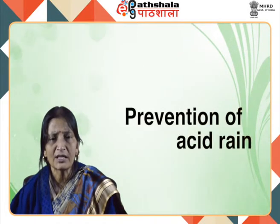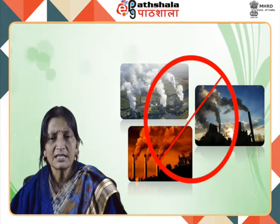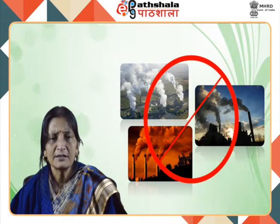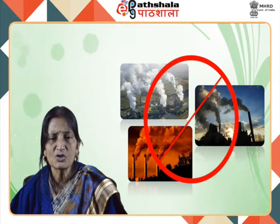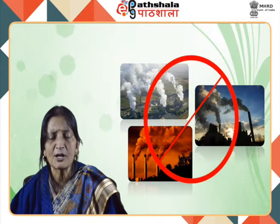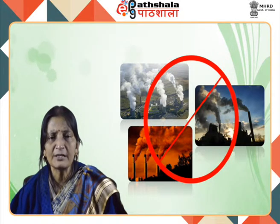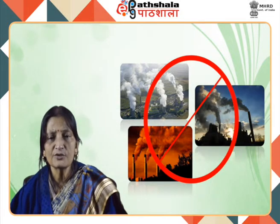Prevention of acid rain: some preventive steps include curtailing the use of fossil fuels by more walking and cycling instead of driving, switching to low sulphur coal, desulphurization of coal before burning, removing sulphur oxides from waste gases coming out of chimney stacks, road traffic restriction, bringing more renewable energy sources such as solar, wind and geothermal into use, and use of battery operated and fuel efficient vehicles.